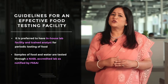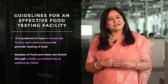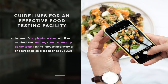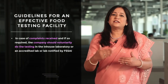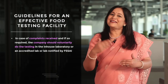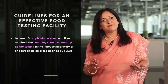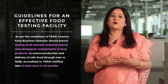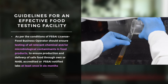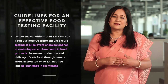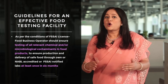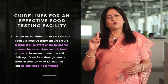It is preferred to have an in-house lab facility and trained analysts for periodic testing of food. In most establishments, it is not possible to have an in-house laboratory. Therefore, it is recommended that samples are tested through an NABL accredited lab as notified by FSSAI. In case of complaints received and if so required, the company should voluntarily do the testing in the in-house laboratory, an accredited laboratory, or a laboratory notified by FSSAI.